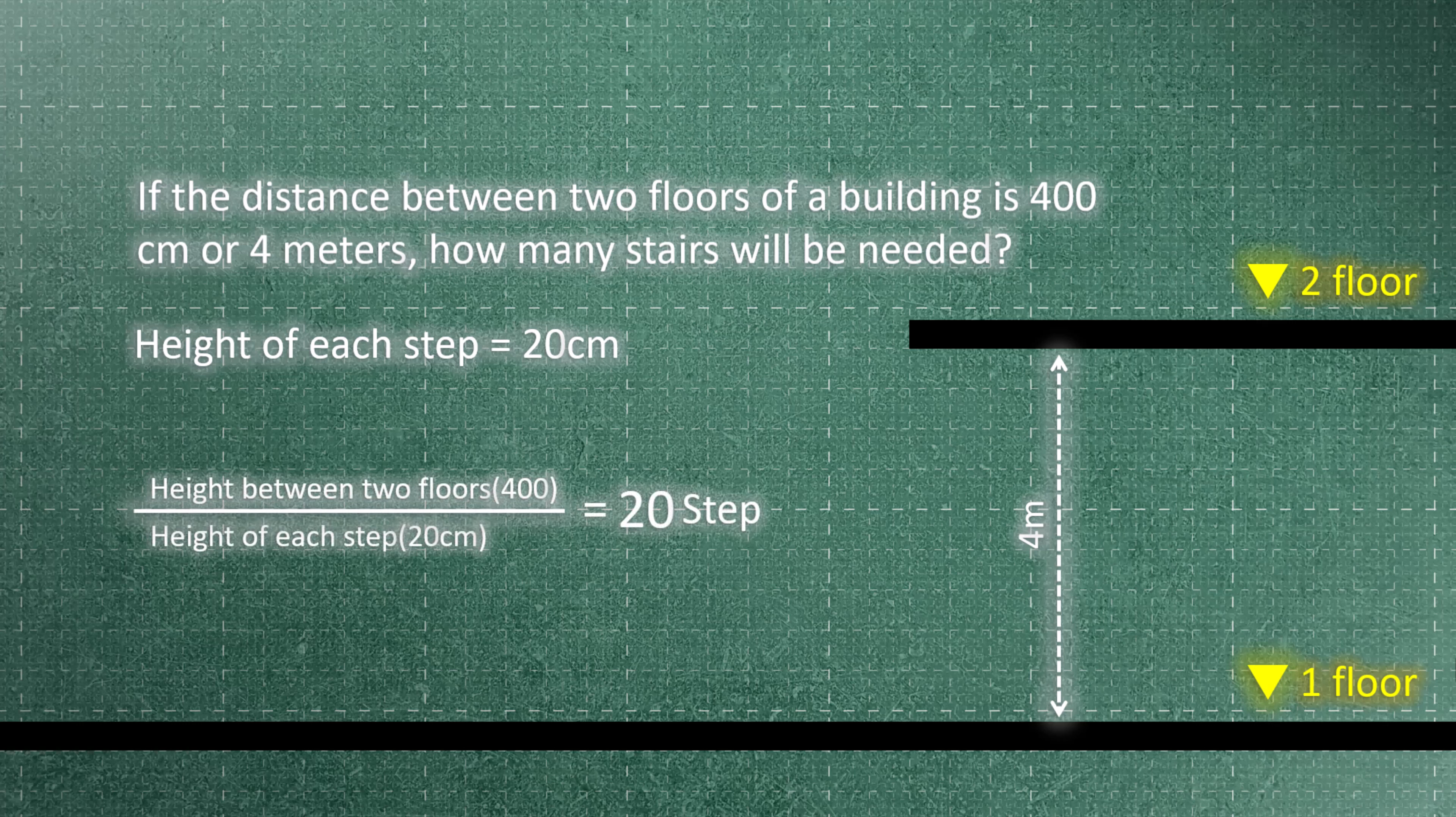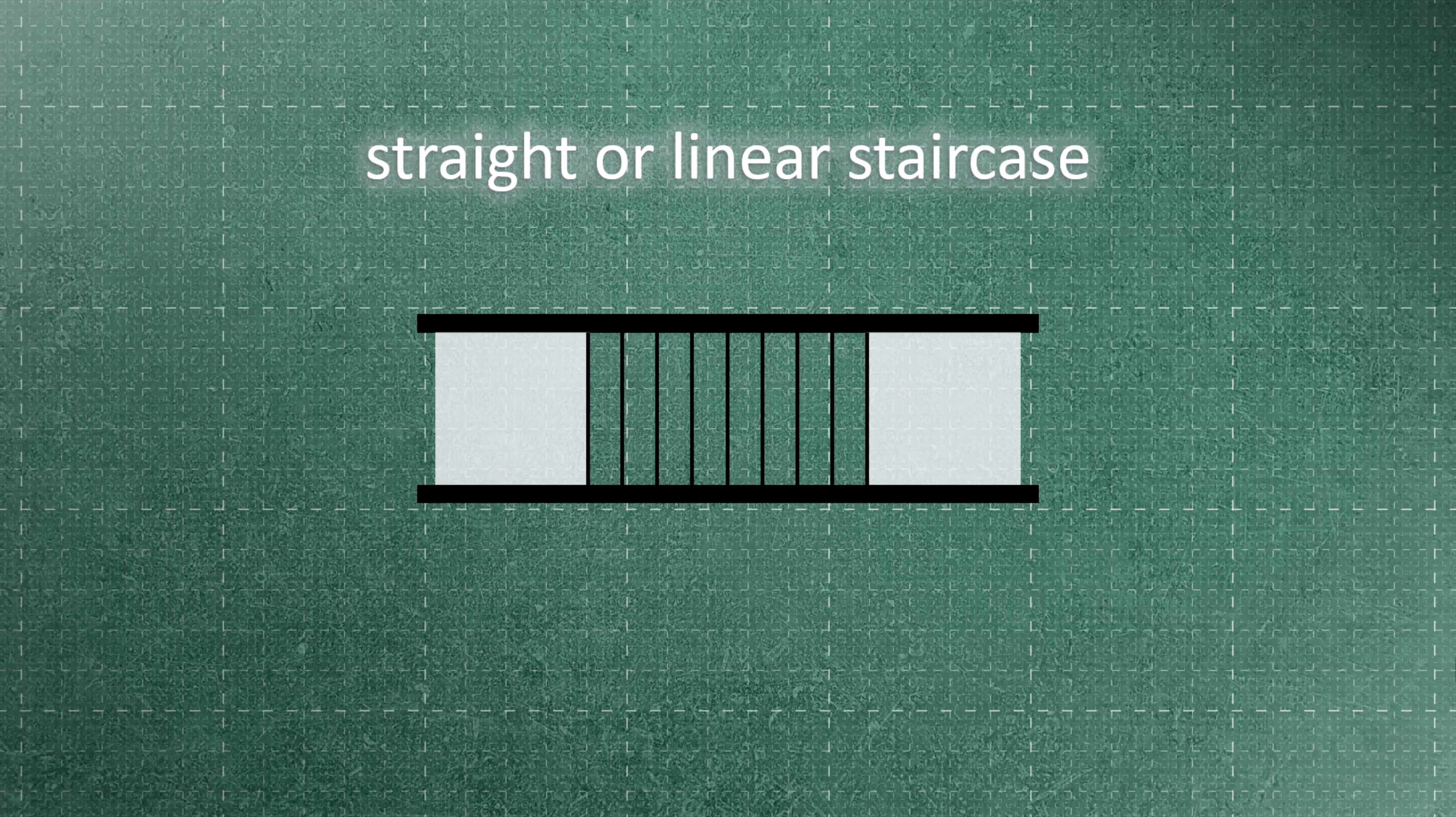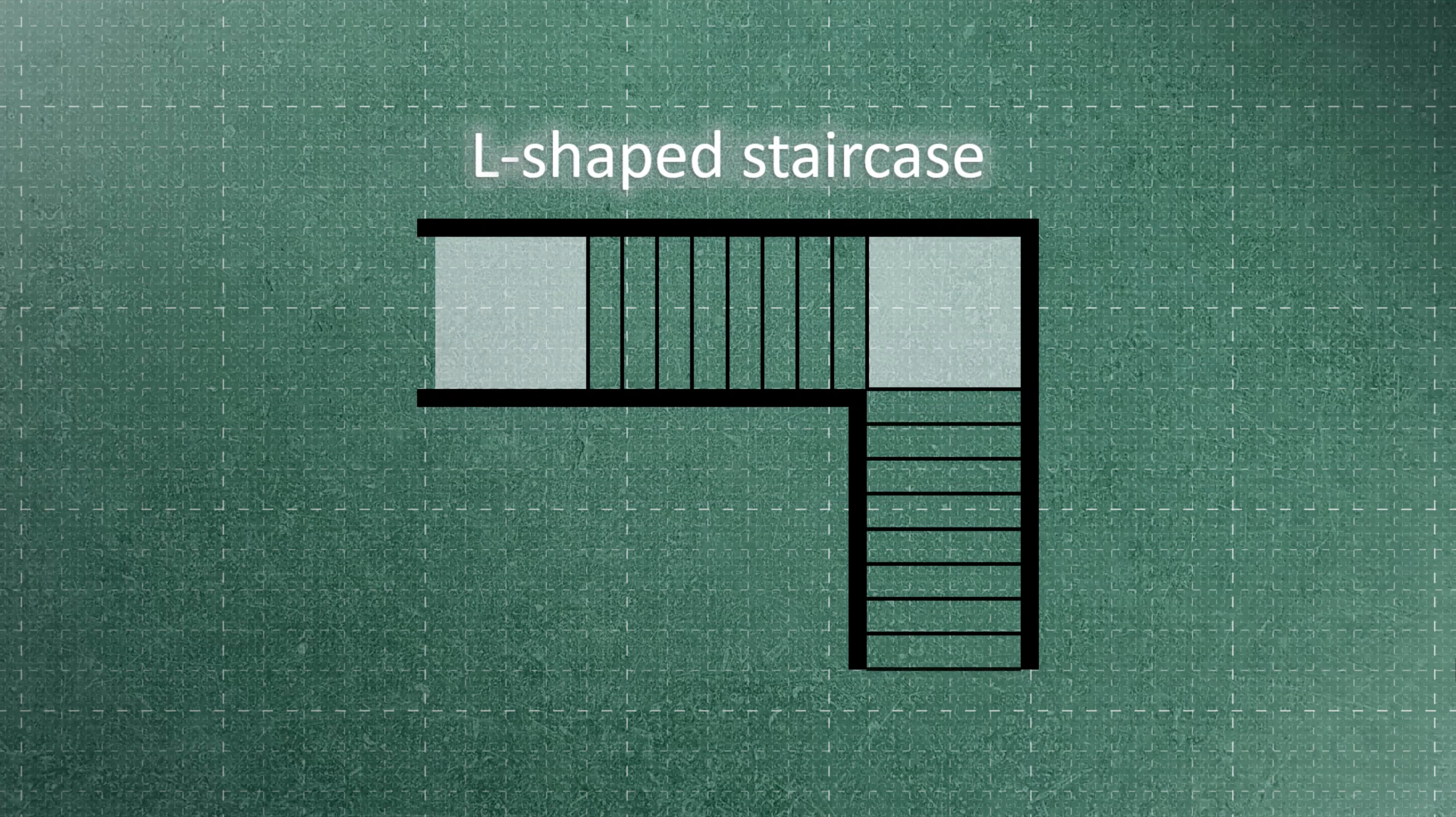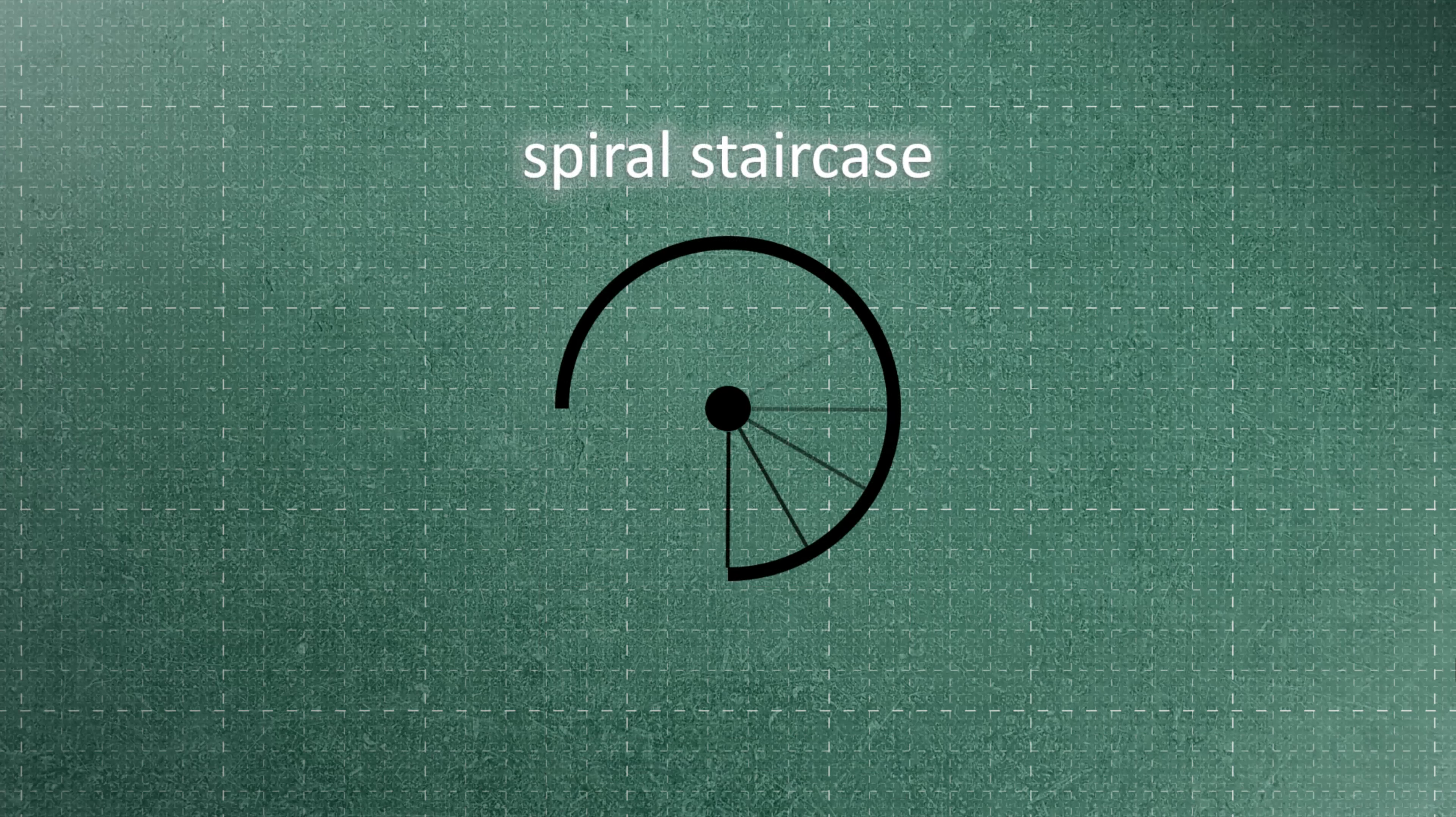Different types of stairs can be used in designs, such as straight or linear staircases, L-shaped staircases, U-shaped staircases, dogleg staircases, spiral staircases, and curved staircases. Additionally, there are more complex types of stairs including the half spiral staircase and the three-quarters turn staircase.